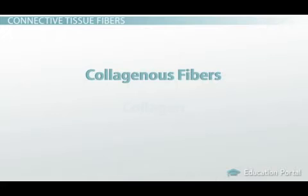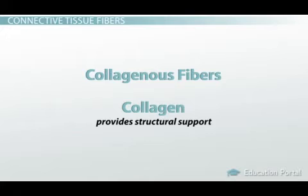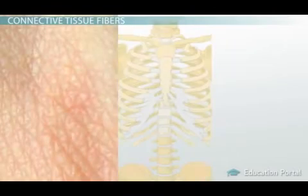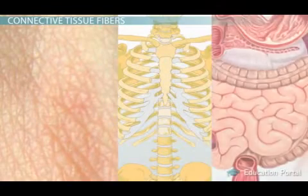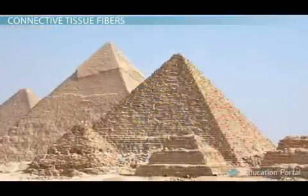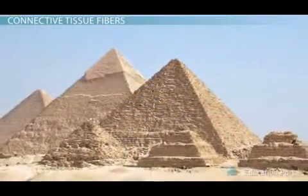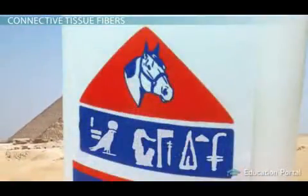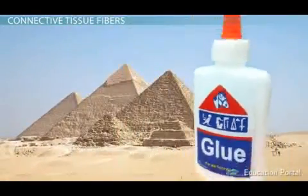Collagenous fibers are made of collagen, a very important material. It provides structural support and can be quite literally described as the glue which holds our body together. We find collagen in everything from our skin to our bones to the lining of our gut. In fact, the ancient Egyptians used to boil the skin and sinew of horses to make glue from collagen.